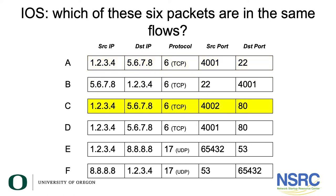Packet C: source 1.2.3.4, destination 5.6.7.8, TCP protocol, source port 4002, destination port 80. Packet D: 1.2.3.4 to 5.6.7.8, TCP, source port 4001, destination port 80. So packets C and D are coming from the same source going to the same destination, same destination port, but different source ports — so is that the same flow or a different flow? Packets E and F are both UDP: source 1.2.3.4, destination 8.8.8.8, source port 65432, destination port 53. Packet F is the reverse of E. I'll give you a second to think about which are in the same flows and which are not.